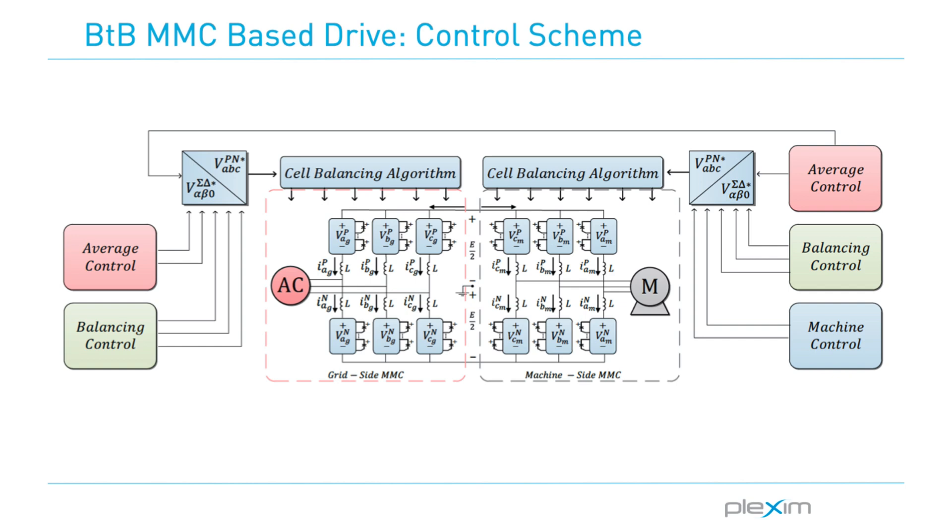There are four different control systems implemented in the model: average control, balancing control, machine control, and cell balancing algorithm and modulation.